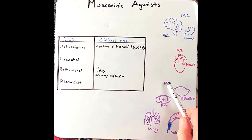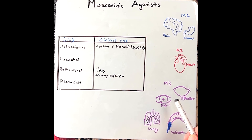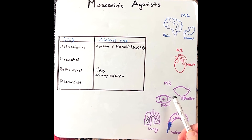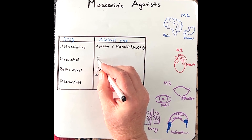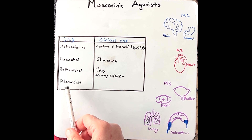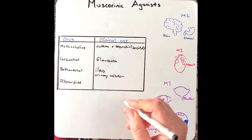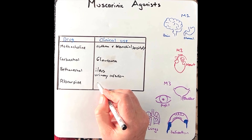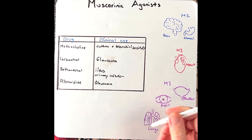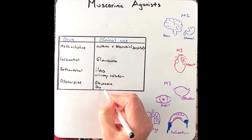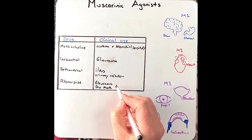Carbachol activates M3 receptors on the pupil, causing pupil constriction and contraction of the ciliary body, increasing aqueous humour circulation and decreasing intraocular pressure within the eye. Therefore, carbachol can be used for glaucoma. Pilocarpine can also be used for glaucoma with a similar action to carbachol, but in addition it increases the secretion of saliva, so it can be used in dry mouth syndromes, specifically Sjögren's syndrome.